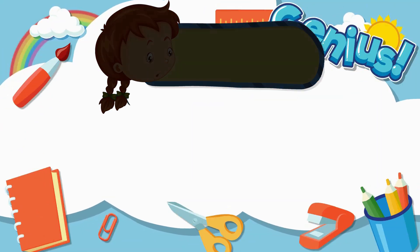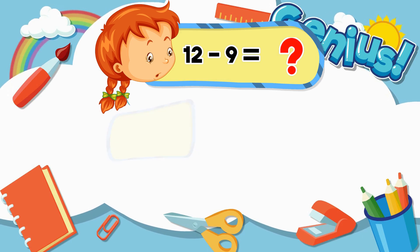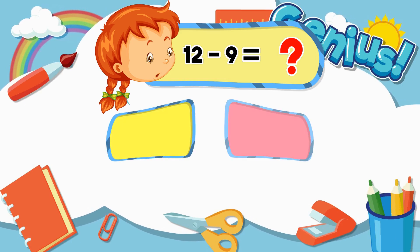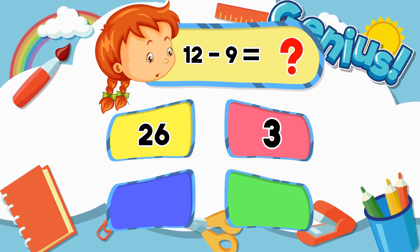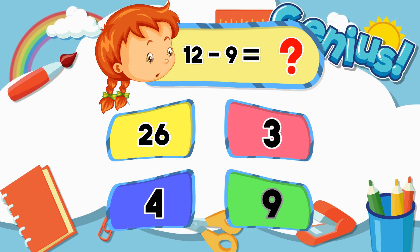What is 12 minus 9? Options: 23, 4. Answer: 3.